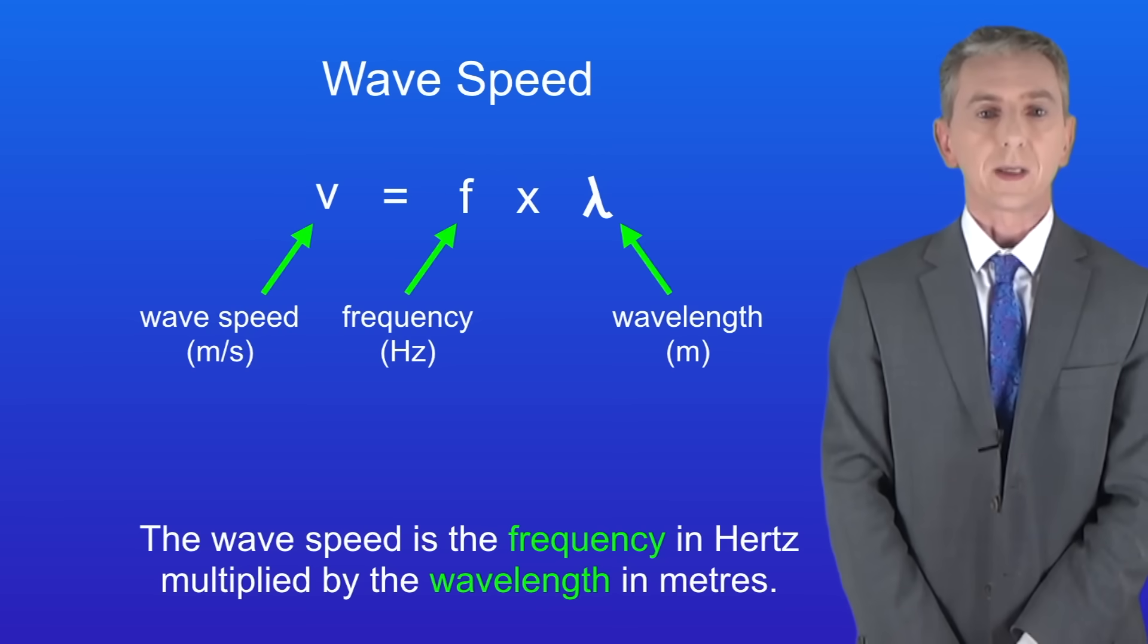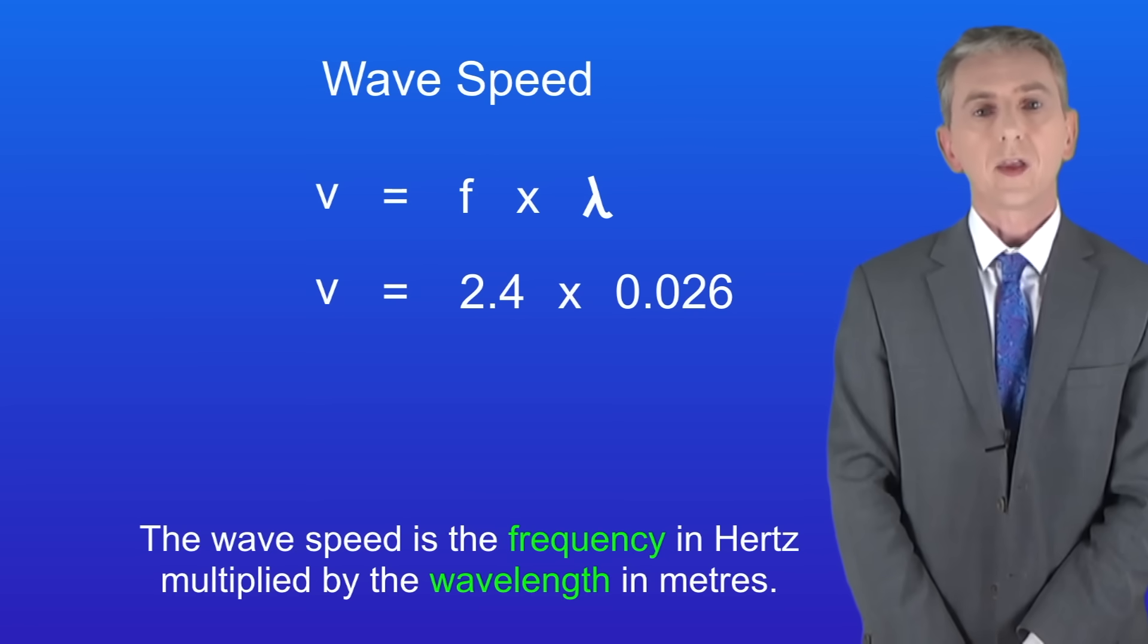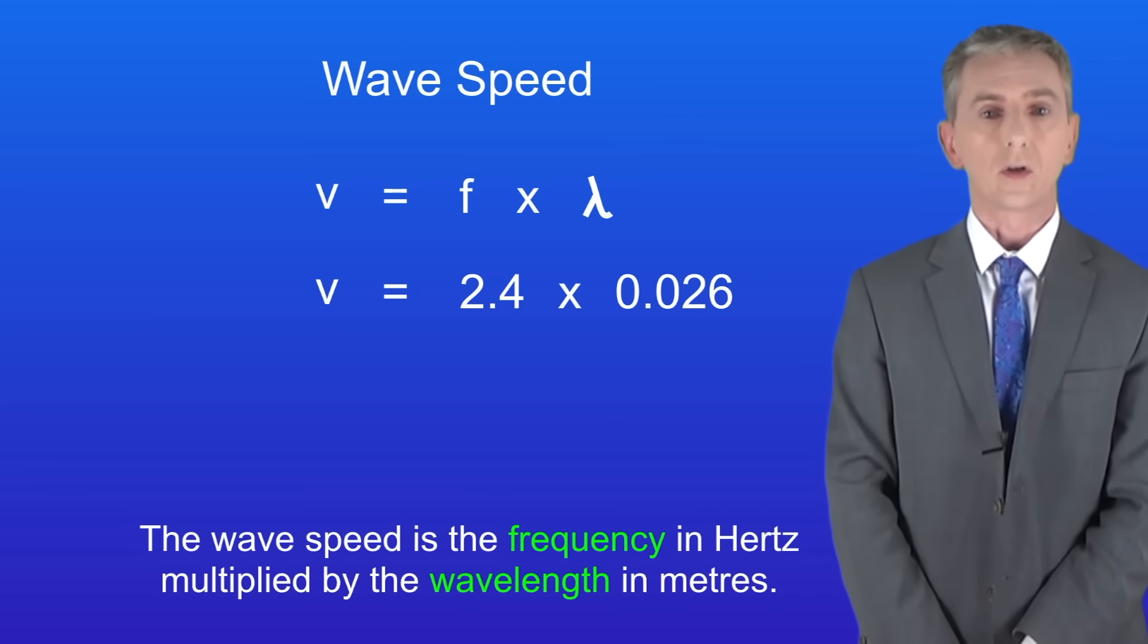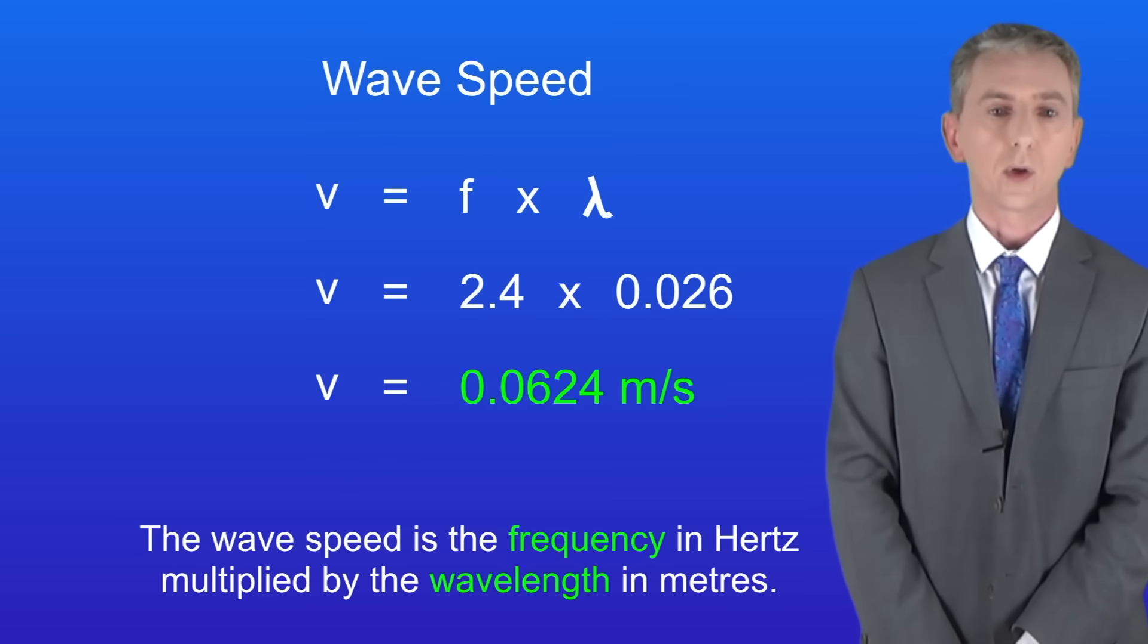Remember that the wave speed is the frequency in hertz multiplied by the wavelength in meters. In this case the frequency is 2.4 hertz and the wavelength is 0.026 meters. Multiplying these together gives us a wave speed of 0.0624 meters per second.